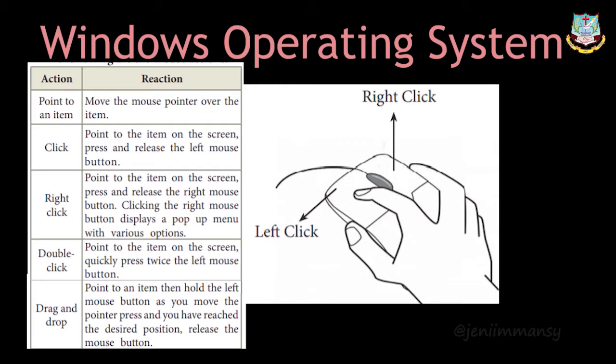Drag and drop — if you want to move a file into a folder, click and hold the left mouse button, drag that file into the folder, then release the mouse button so the file is dropped inside. You can also use drag and drop for scrolling in a document — moving from top to bottom, bottom to top, or left to right.